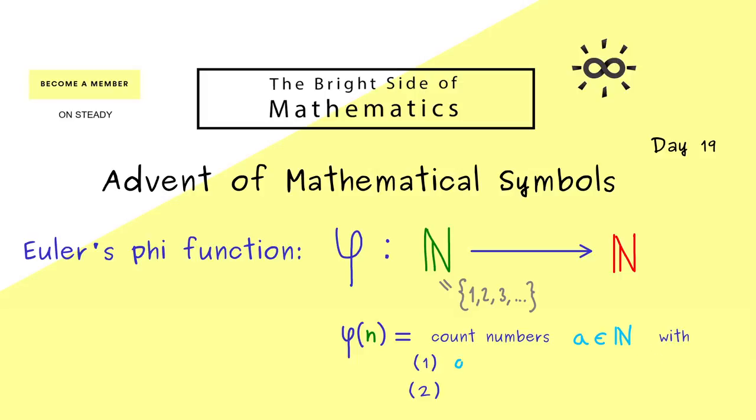The first one is very simple. We only consider numbers that are less or equal than n. This means that the outcome of the phi function can never be greater than the input.